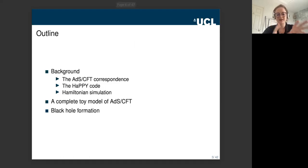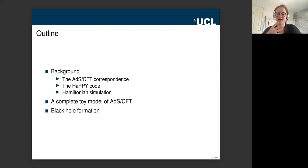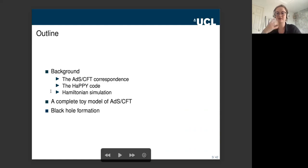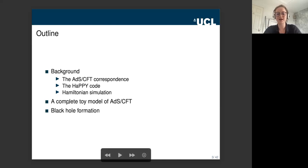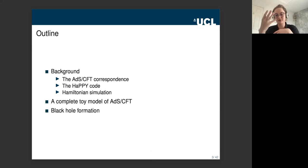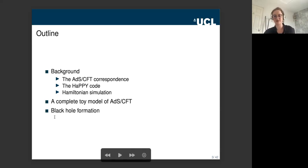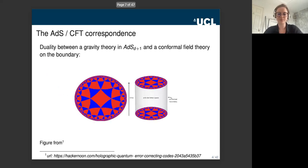In the rest of the seminar, I'll start by giving a brief overview of the ADS-CFT correspondence and the features we're going to try to capture in our toy models. Then I'll talk about the happy code, one of the earlier toy models we build on heavily. Then I'll discuss Hamiltonian simulation, the extra ingredient we add to get duality at the level of local Hamiltonians. Finally, I'll give a high-level overview of our toy model and talk briefly about how we might look at black hole formation within it.